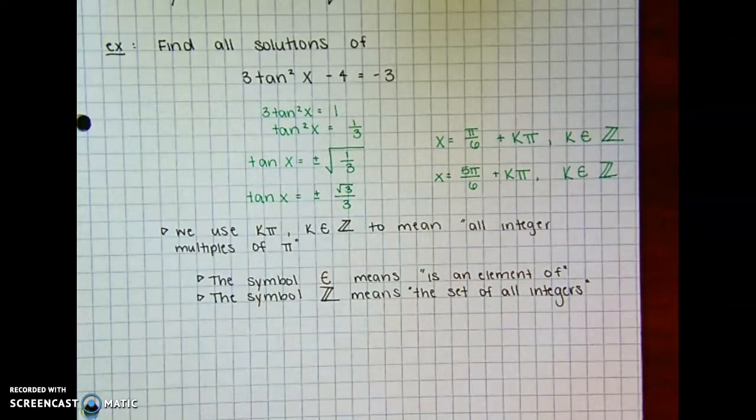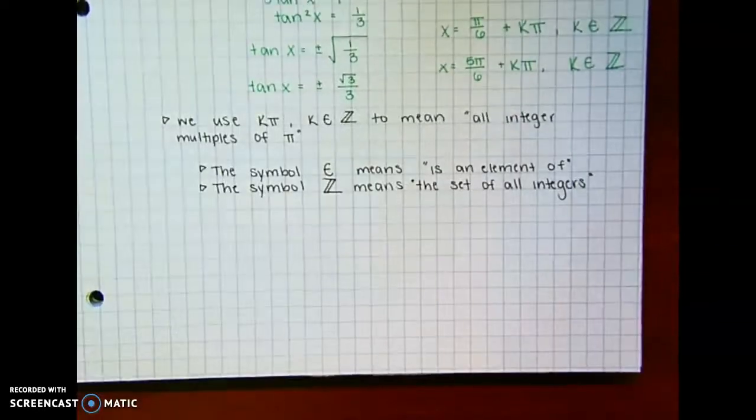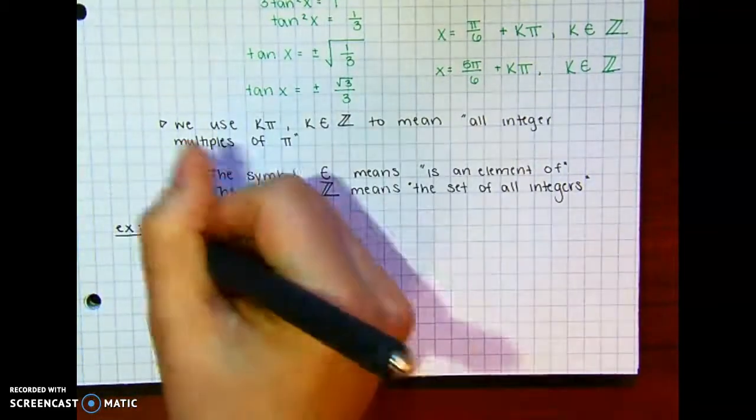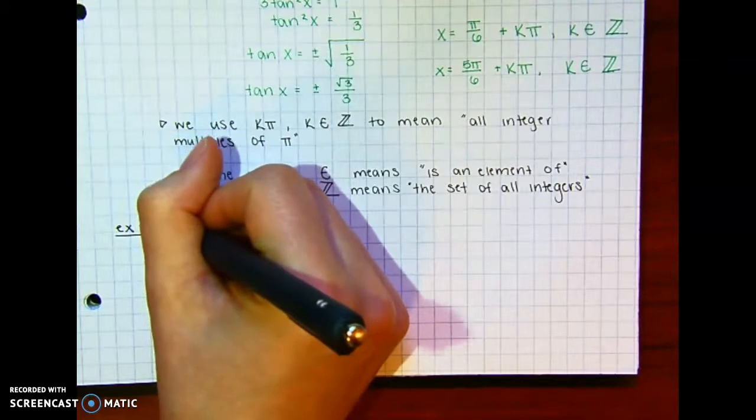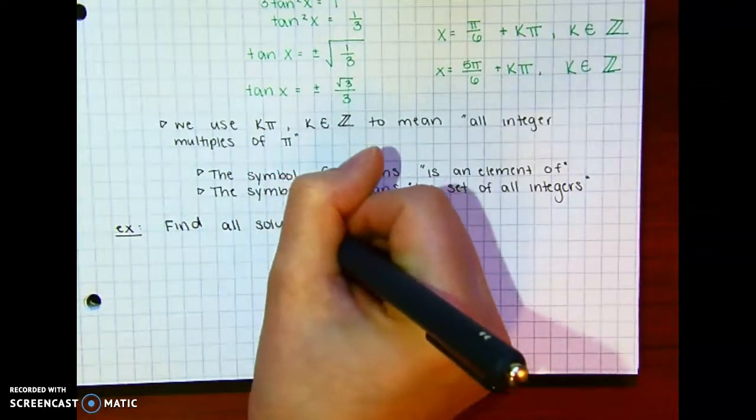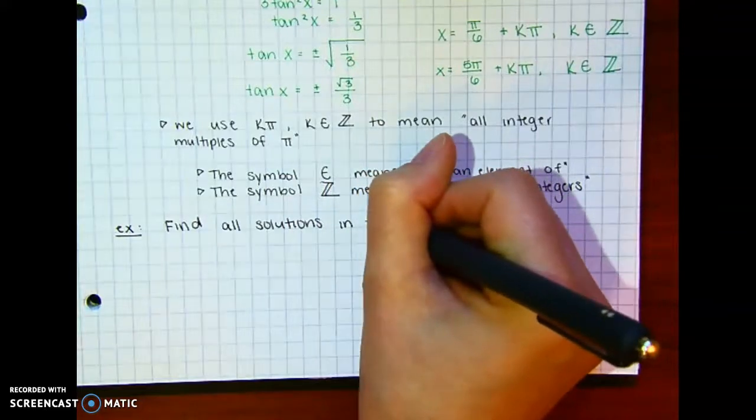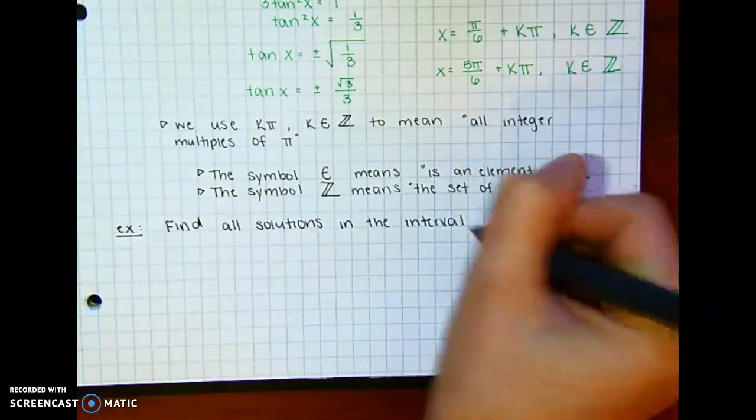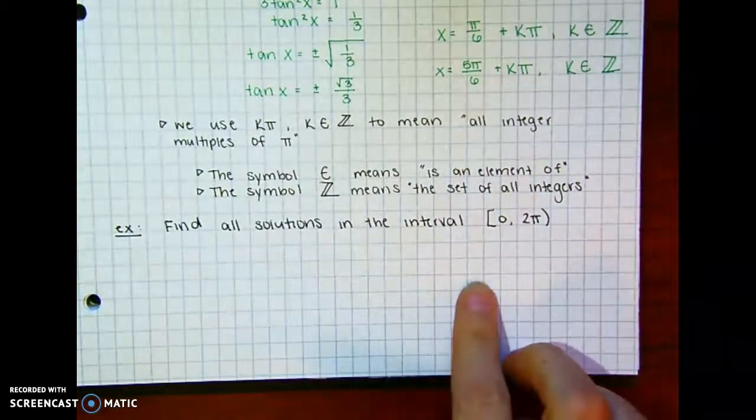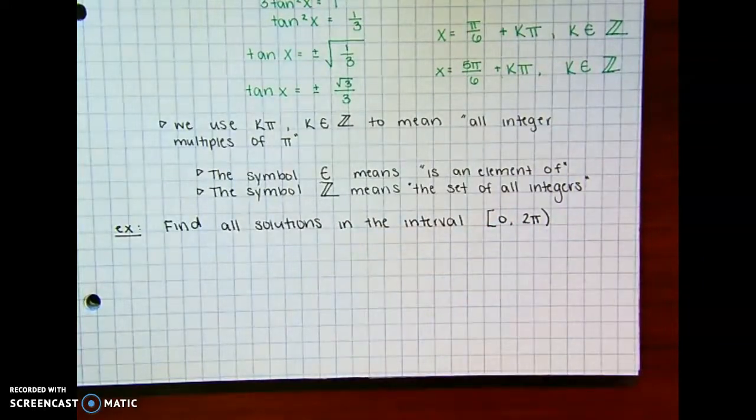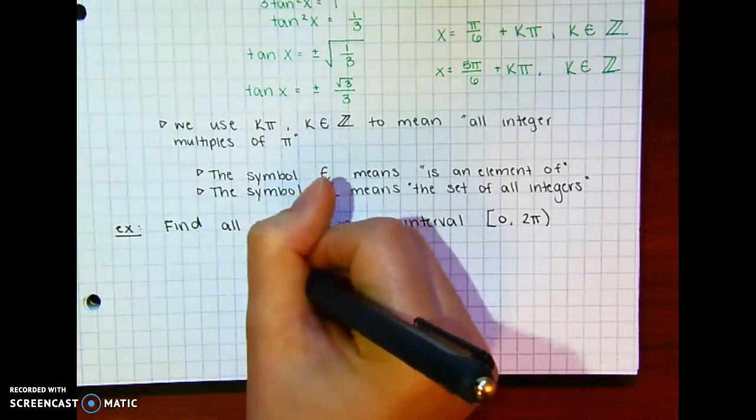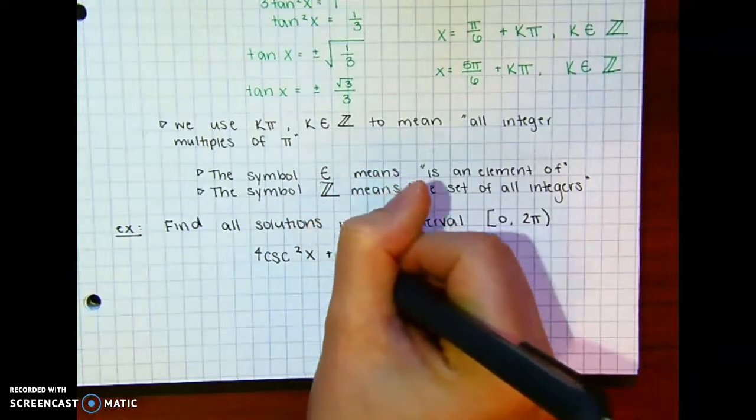All right, there's one more kind of example you could have, and that is if it's not all solutions but all solutions of an interval. So let's do find all solutions in the interval hard bracket 0, so including 0, to 2π with a soft bracket. So if it is going around 360, we would only say 0, we wouldn't say 2π because it's not included in our interval. So 4 cosecant squared of x plus 2 equals 18.